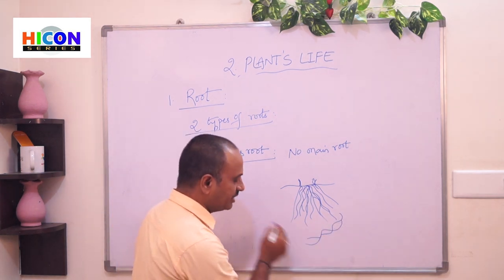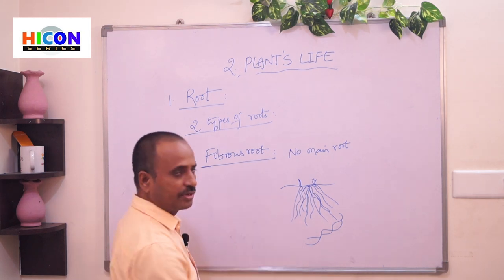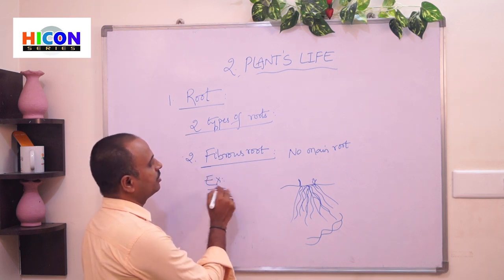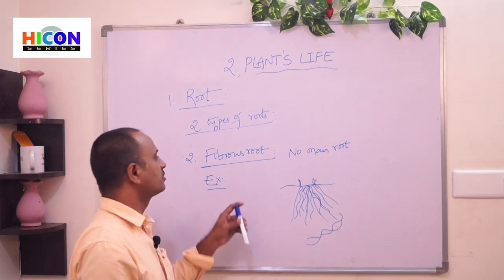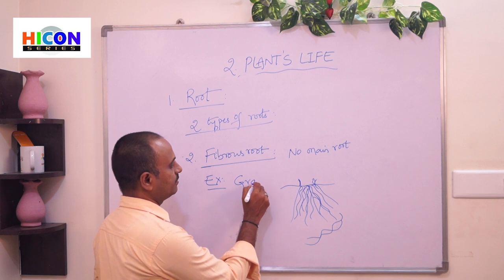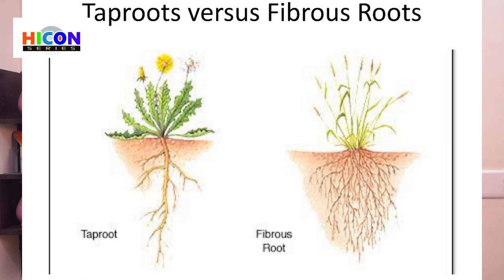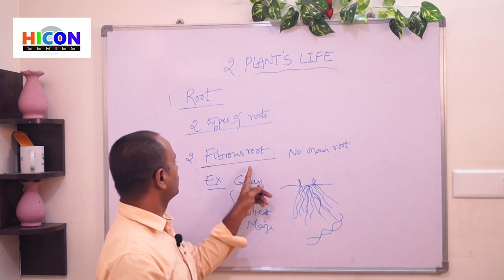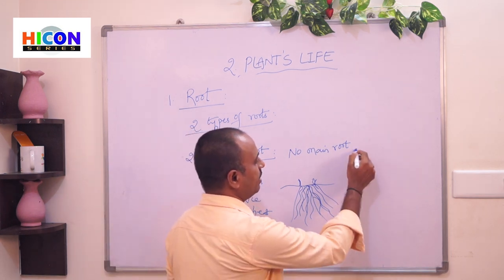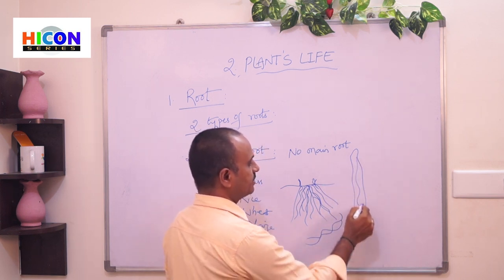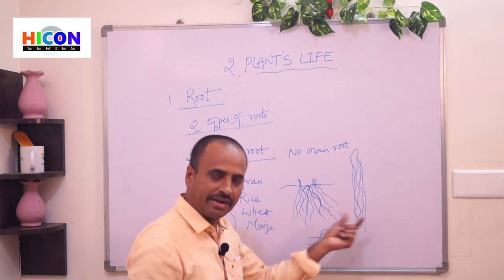This type of root is called fibrous root. Plants with fibrous roots are mostly grass-related plants — grass plants, rice plants, wheat plants, and maize plants. All these grass-related plants have fibrous roots. We can easily tell whether a plant has fibrous or tap roots by just observing its leaves.